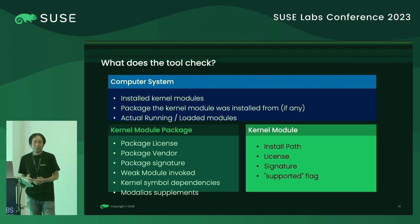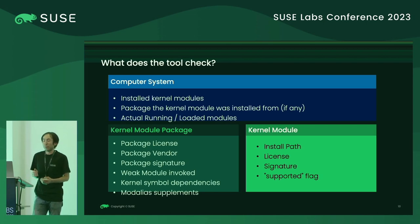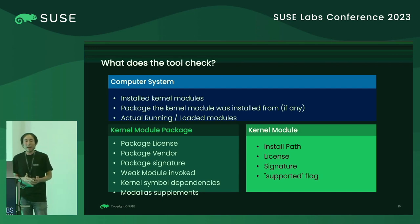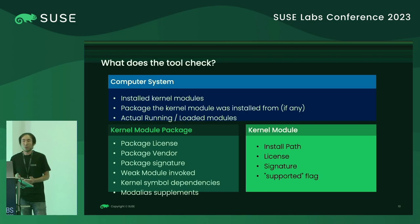We also check kernel modules installed or running in the system, including their install paths, whether they have a license, signature, and supported flag. For kernel module packages, we also check the kernel modules inside the KMP. After all checks, we give a report to the user.